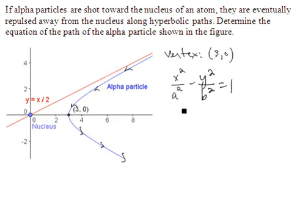And a is known because that's the value of the vertex there. So we have x squared over 9 minus y squared over b squared equals 1. We need to determine the value of b.